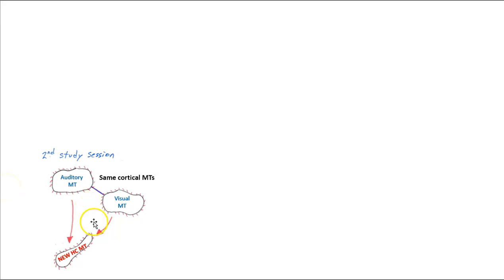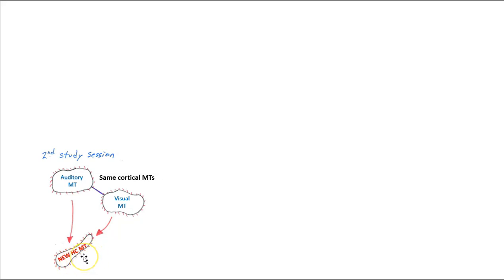Now we're ready for our second study session. We're going to be studying the same information, so the same memory traces in the cortex will simply be reactivated again. We're processing the same information, but now we're making a new hippocampal memory trace. This is the beauty of the hippocampal system — remember, it gets wiped clean, so it's a different set of hippocampal neurons responsible for making the new memory trace of the same information.